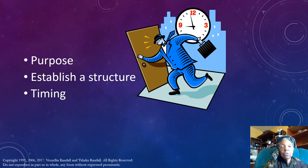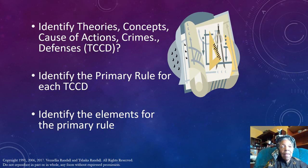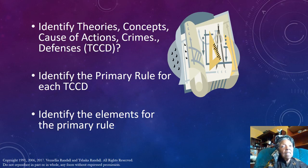As you do your outline, go from the general to the specific. For each course you need to identify the theories, concepts, causes of action, crimes, and defenses that were covered in that course. Not every theory, not every concept, not every cause of action, not every crime, not every defense will be covered in a course, and so you don't need to take responsibility for all of them on law school exams.